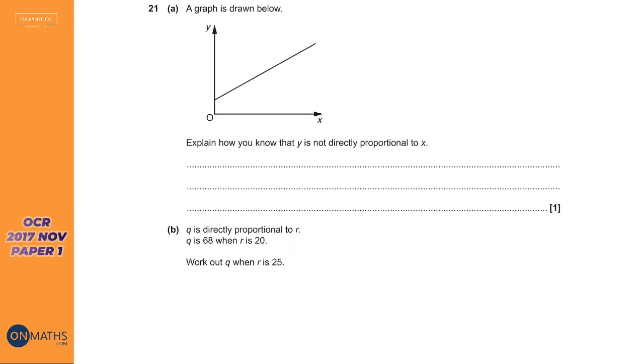Last up is our OCR question. Now, this question was the very last question on the paper. So it's theoretically the hardest question on the paper. You'll find that for question B, it's exactly the same as we've done before, but you don't have a context.